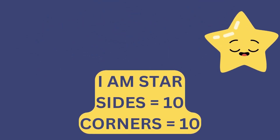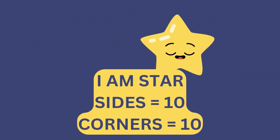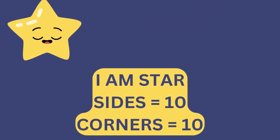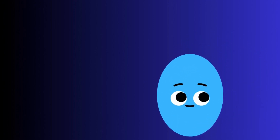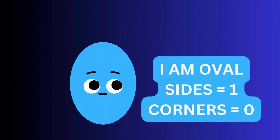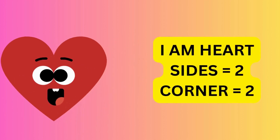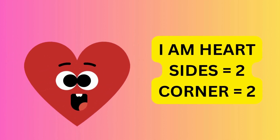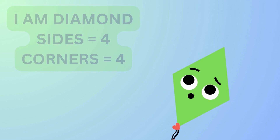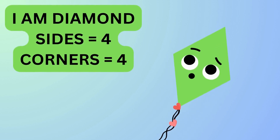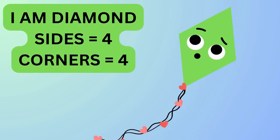I am star. I have ten sides and ten corners. I am oval. I have one side and no corners. I am heart. I have two sides and two corners. I am diamond. I have four sides and four corners.